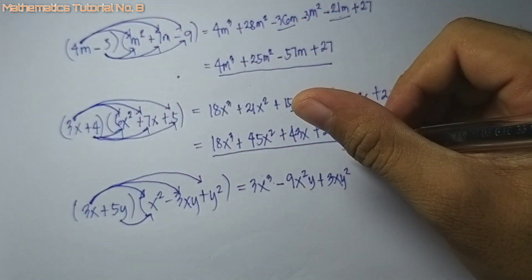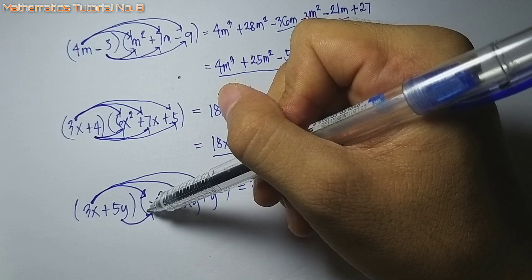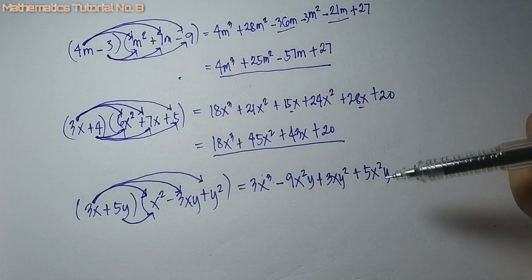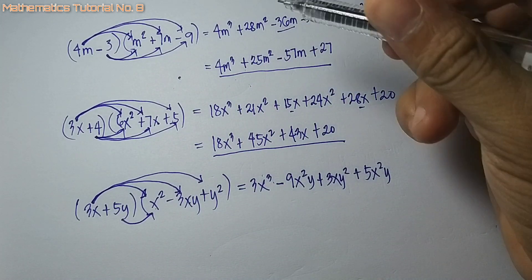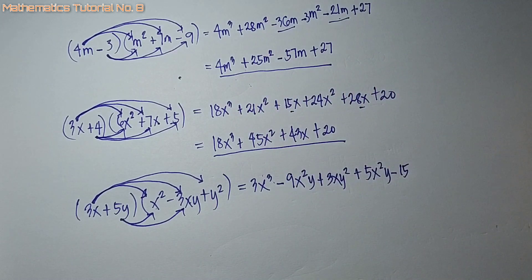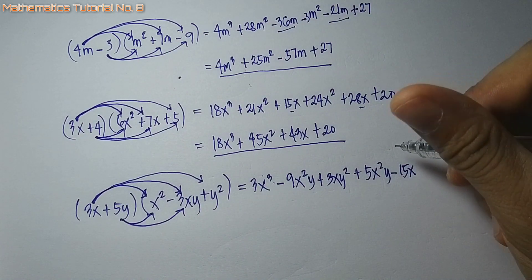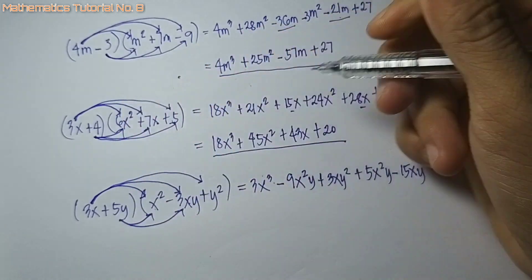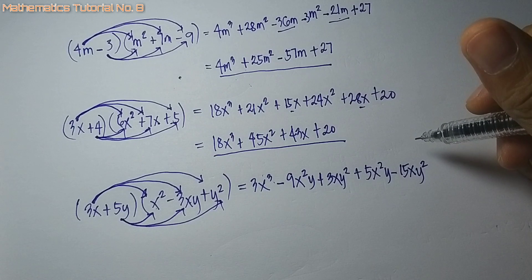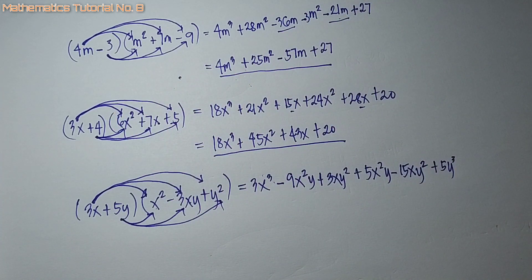Sunod, 5y times x squared — that is positive 5x squared y. Kopyahon ang variables: x squared from picas, y from ato. Then 5y times negative 3xy — 5 times negative 3 is negative 15. Sa x: wala may x sa 5y, so kopyahon ang x. Sa y: 1 plus 1, that is 2. So negative 15xy squared.